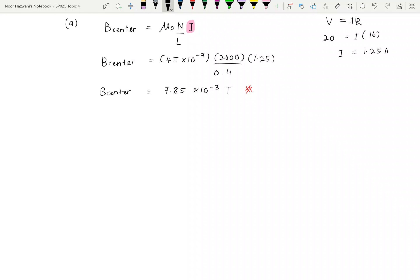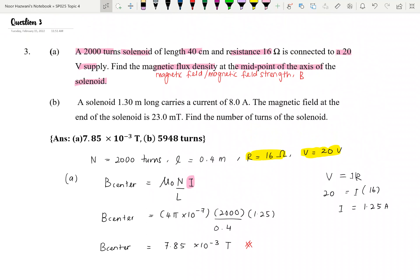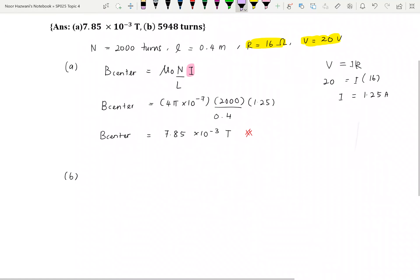How about part B? Let's read the question. A solenoid 1.3 long carries current 8 amp. So maksudnya dia bagi kita length, dia bagi kita current. The magnetic field at the end of the solenoid is 23 milli tesla. So it asking for the number of turns of the solenoid.